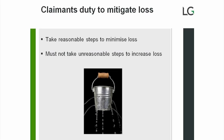The last point to touch on is the obligation to mitigate, which falls on the claimant and is likely to be a limiting factor on the extent of damages claimed. As a general rule, the claimant cannot recover damages for any part of their loss which they could have avoided by taking reasonable steps. There are effectively two steps: first, a positive obligation to take reasonable steps to minimise loss; and second, a negative obligation not to take any unreasonable steps to increase the loss. That concludes the overview of loss and damages in contract law.